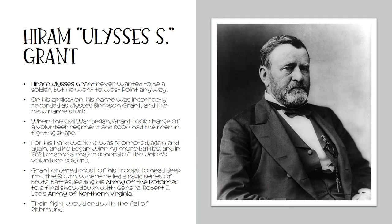Hiram Ulysses Grant never wanted to be a soldier, but he went to West Point anyway because that was what was expected of him. On his application, his name was incorrectly recorded as Ulysses Simpson Grant, and the new name stuck. When the Civil War began, Grant took charge of a volunteer regiment and soon had the men in fighting shape. He was promoted again and again, and in 1862 became a major general of the Union's volunteer soldiers. Grant ordered most of his troops deep into the South, where he led a rapid series of brutal battles, leading his Army of the Potomac to a final showdown with General Robert E. Lee's Army of Northern Virginia.